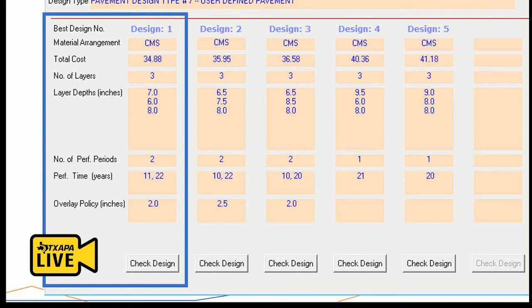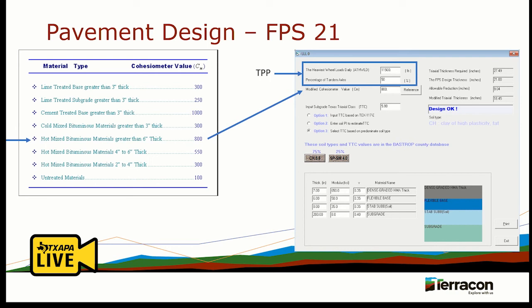Now let's cover the required checks. The pavement manual requires a Texas triaxle check. One key component driving this check is that average of the 10 heaviest wheel loads daily from TP&P. There's an allowable reduction — a cohesiometer value — and depending on the layers you use, you select the one that gives you the best value. In this case with the thicker hot mix, once you hit run using the default sub-grades, the design is okay — it has enough thickness to protect the pavement from those occasional heavy loads.